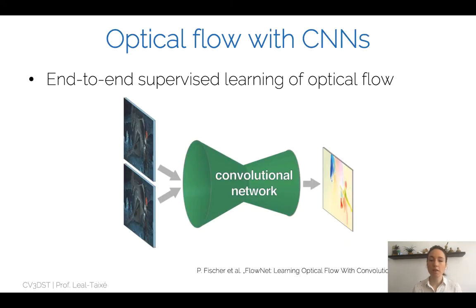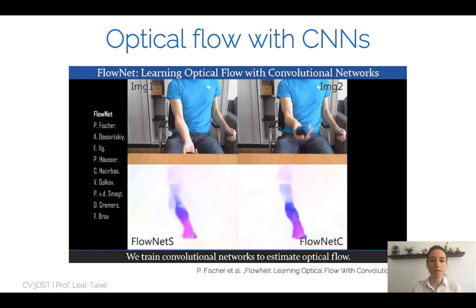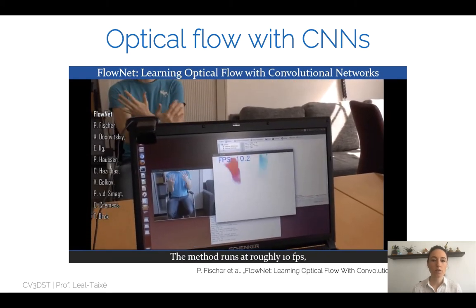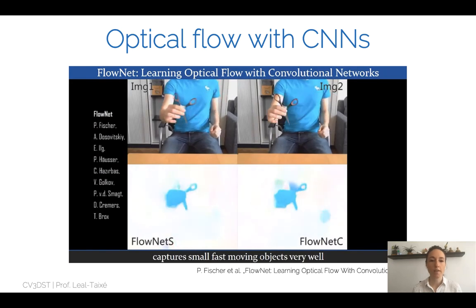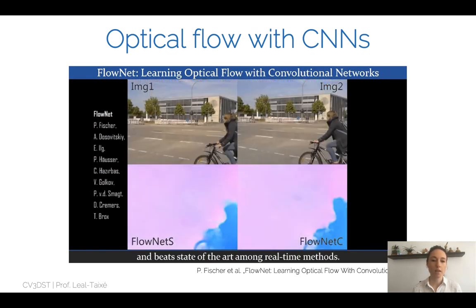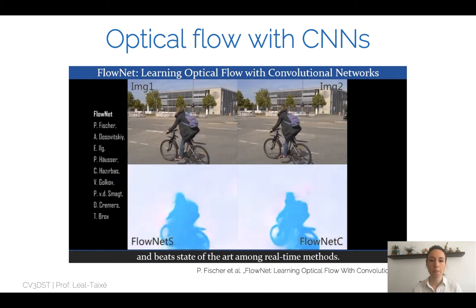As soon as 2015, we started seeing methods that use CNNs to compute optical flow — end-to-end supervised learning of optical flow. We feed two input images to a convolutional neural network, which directly produces an optical flow map. The results are quite good, following all types of motion. This is all with convolutional neural networks: direct prediction of the optical flow output using hue and saturation to represent direction and magnitude.